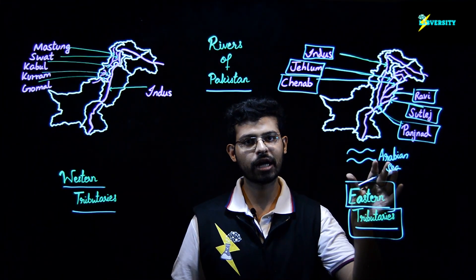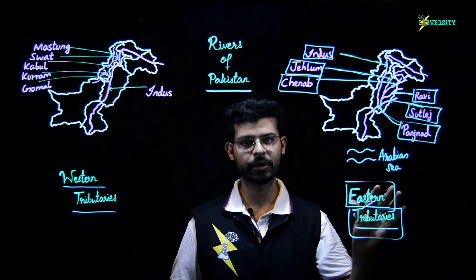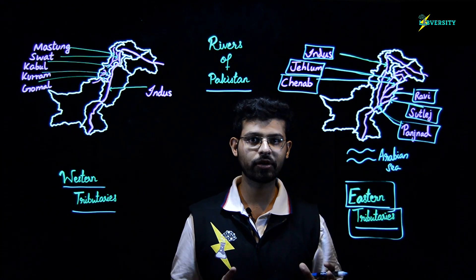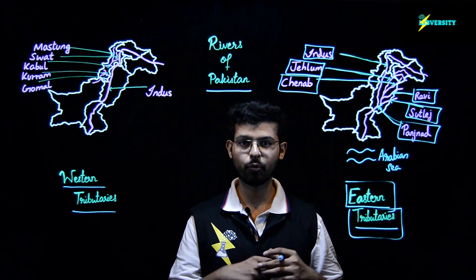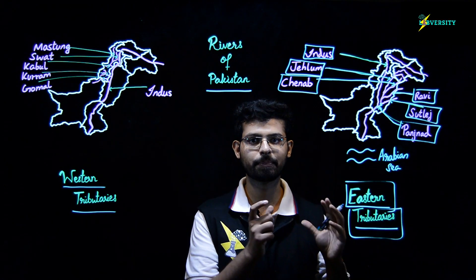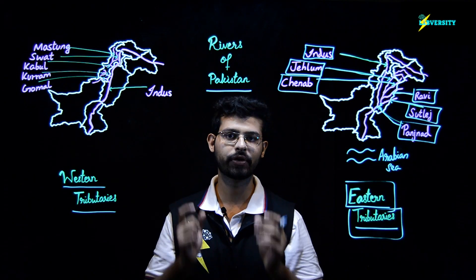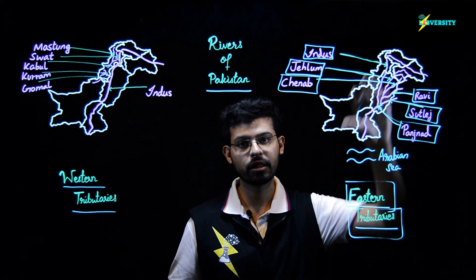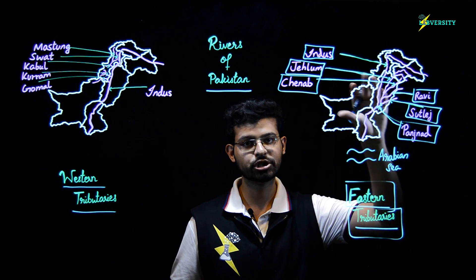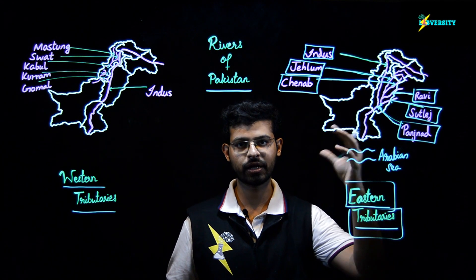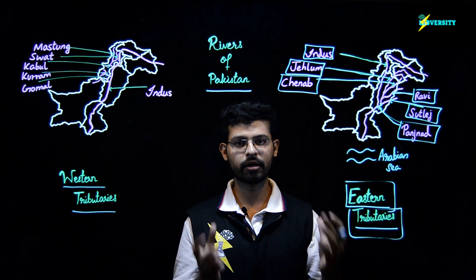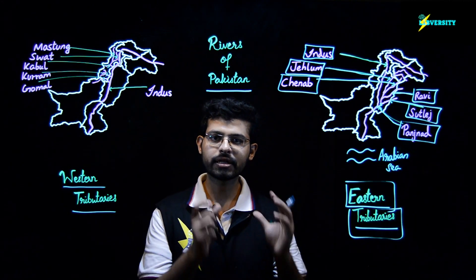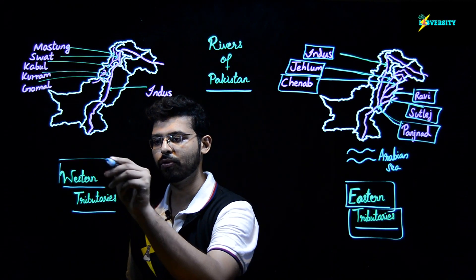The eastern tributaries of River Indus are very long and wide rivers. They have more volume of water in them compared to the western tributaries, and they drain a very large area — you can see all of Punjab and Sindh being covered — so we can imagine the length of the area they cover.